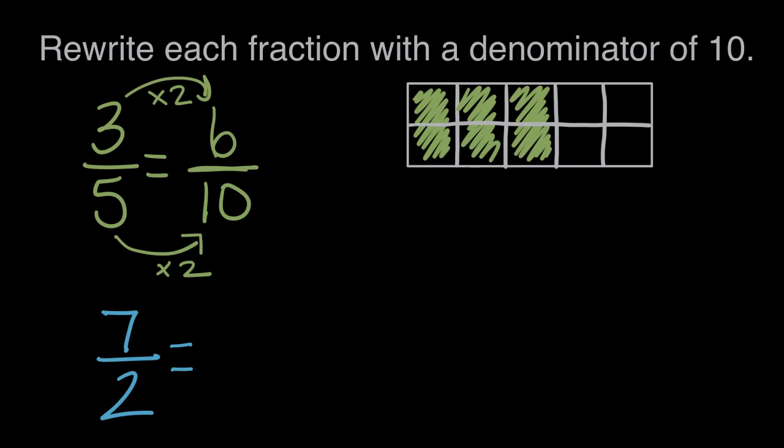So three-fifths can be rewritten as six-tenths. Three-fifths is equal to six-tenths. And again, we didn't change the fraction. We didn't change how much was shaded. Three-fifths and six-tenths represented the same amount.